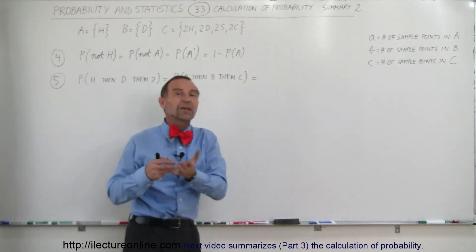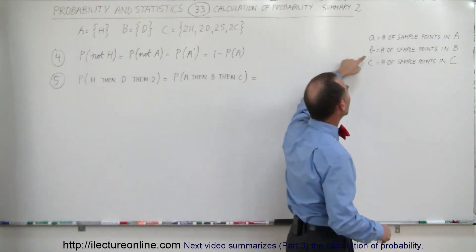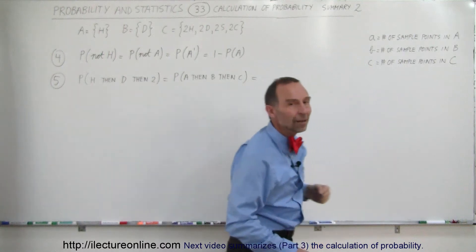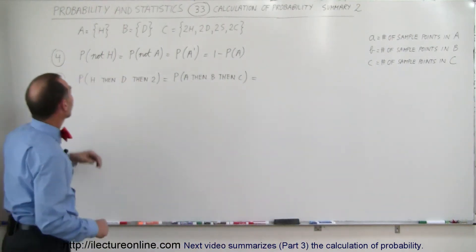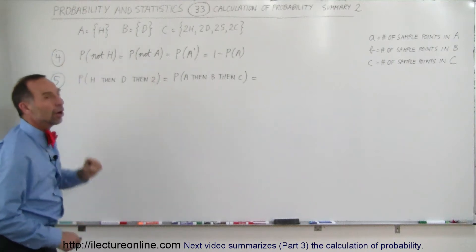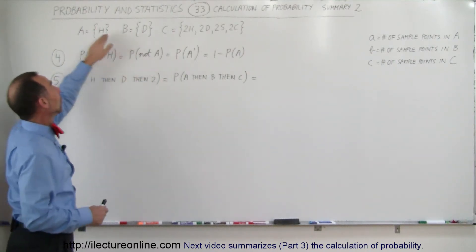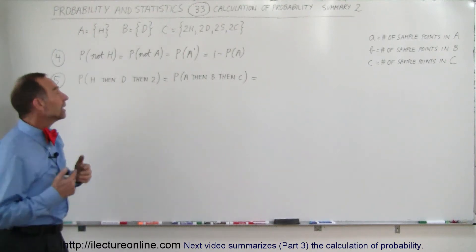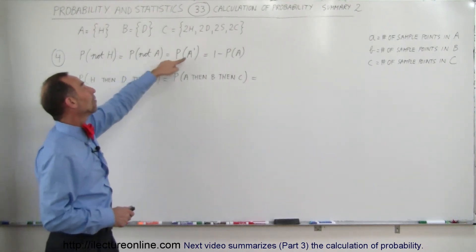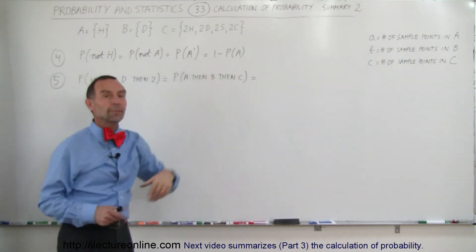The sample space here is all of the cards in the deck, and small a, small b, small c simply means the number of sample points in events A, B, and C. Looking at this rule right here: what is the probability of not getting a heart? That is equal to the probability of not A, which equals 1 minus the probability of A.